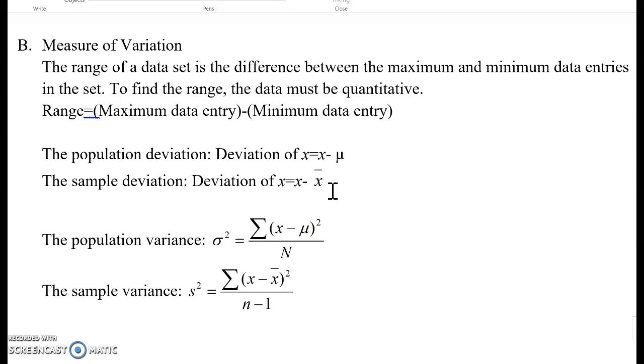You will see one difference compared to population variance and sample variance, which is the denominator, here n, but here n minus 1. So, what is the reason we have to subtract 1 from total number of data set for sample variance?